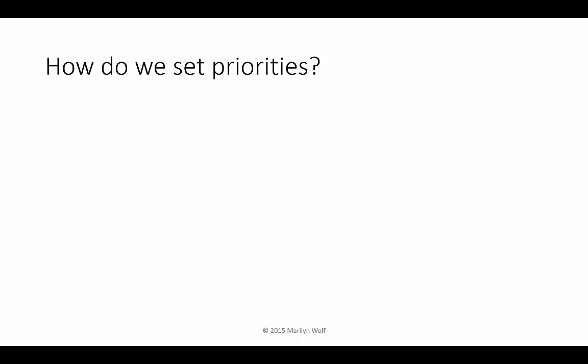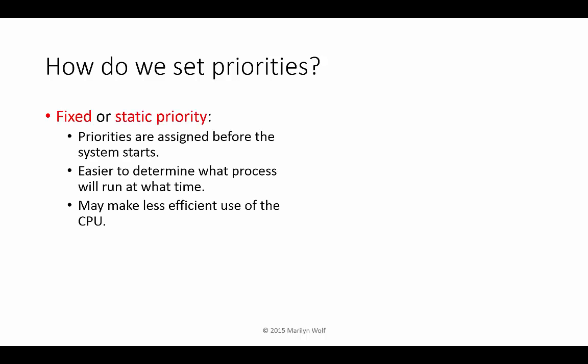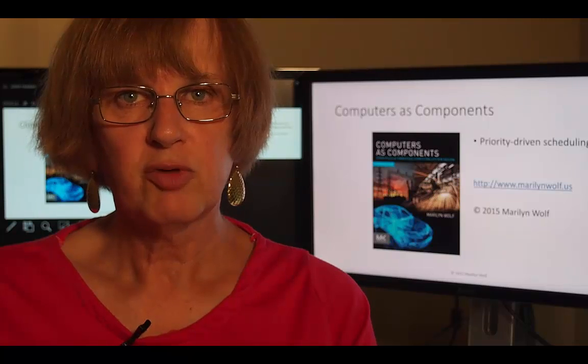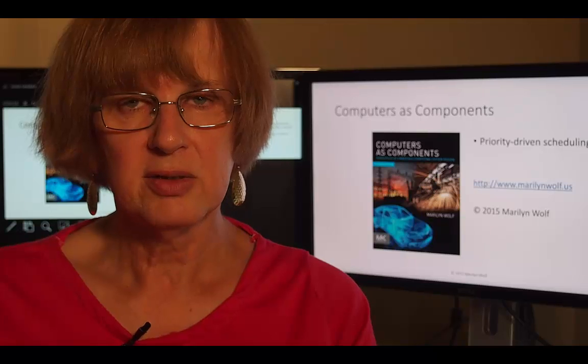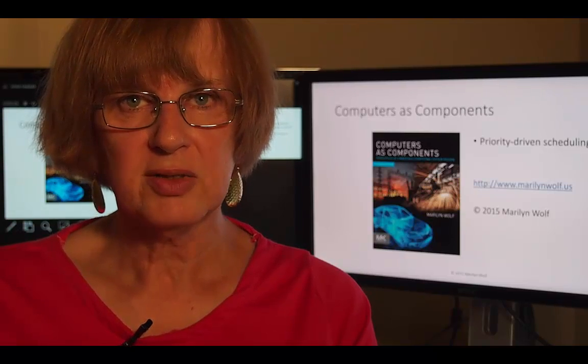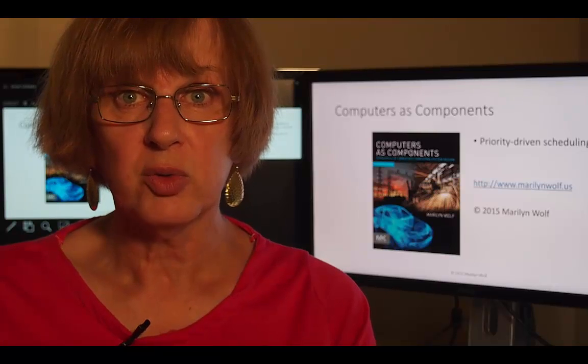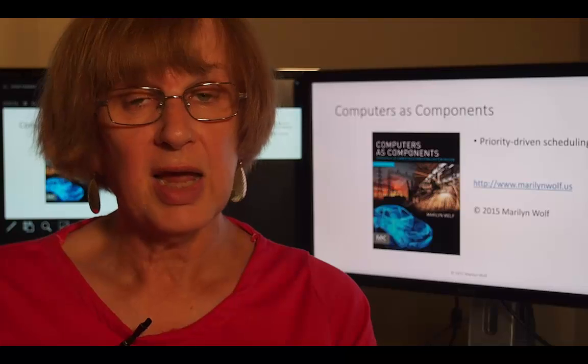We can set priorities in different ways and get different types of schedulers. Fixed or static priorities are assigned at design time and don't change during execution. It's easier to figure out how fixed priority systems work, but they can make less efficient use of the CPU. Dynamic priority systems change the priority of processes during execution. They're more complex to analyze, but they can make more efficient use of the CPU. To summarize: priorities tell the scheduler how to choose which process to run next. The highest priority process that's ready to run will execute next. By setting priorities in different ways, we can get different schedules out of the same scheduler code, either statically at design time or dynamically during execution.